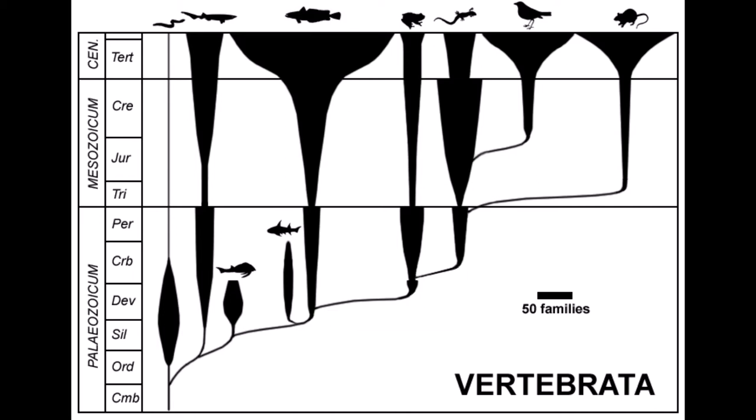Evolutionary phenomena are often summarized in spindle diagrams like this one. The seven little pictures at the top signify the extant classes of vertebrates: jawless fishes, cartilaginous fishes, bony fishes, amphibians, reptiles, birds, and mammals.